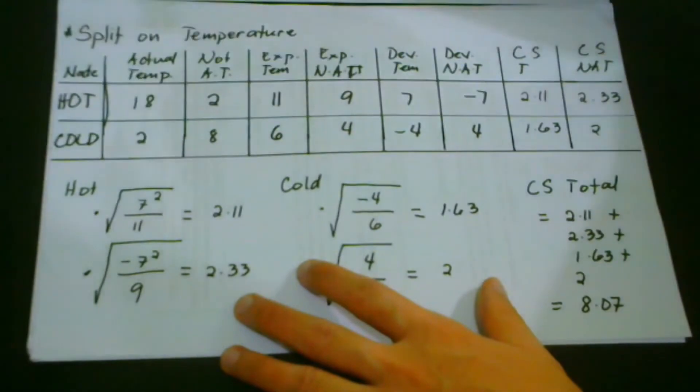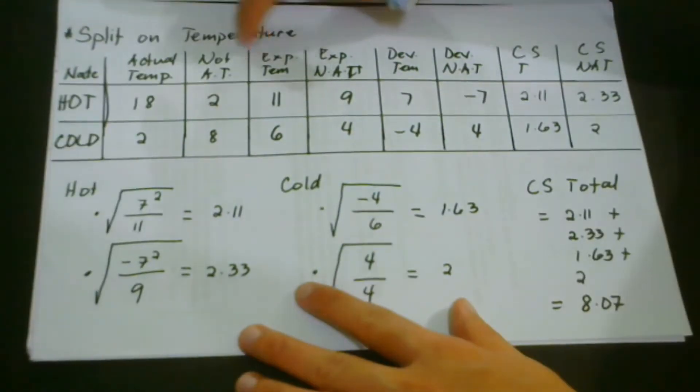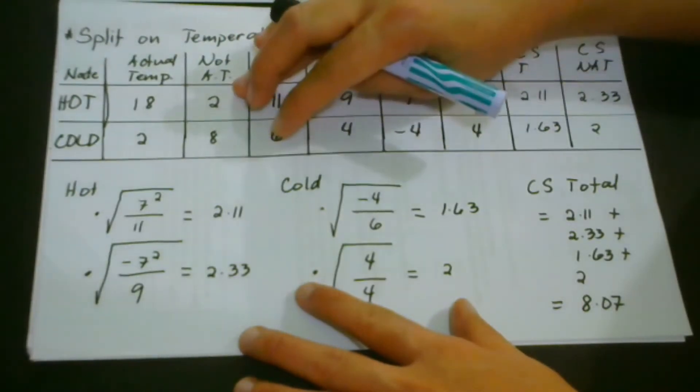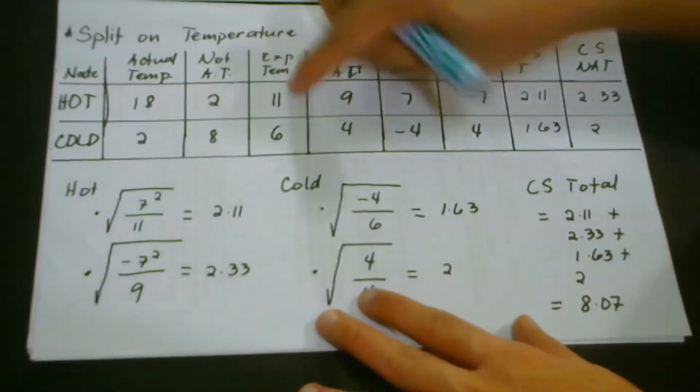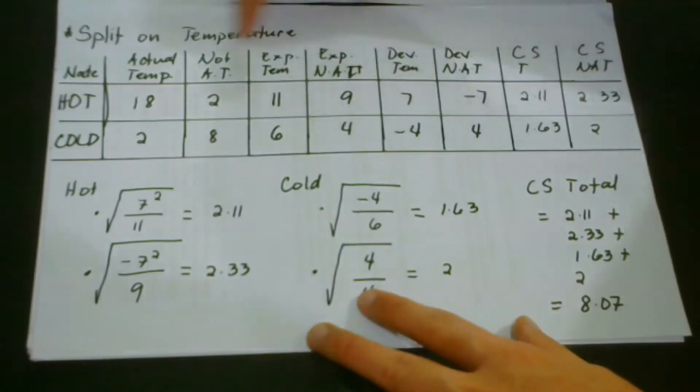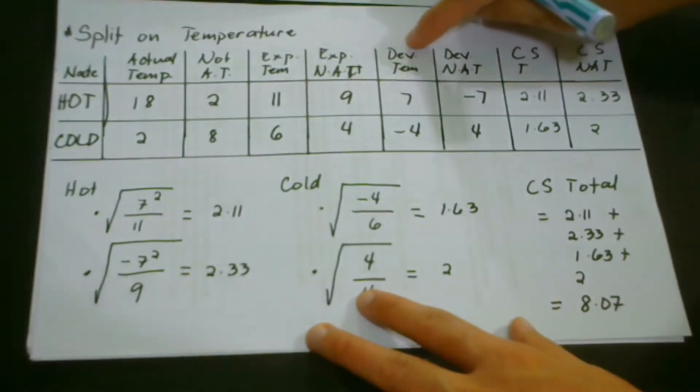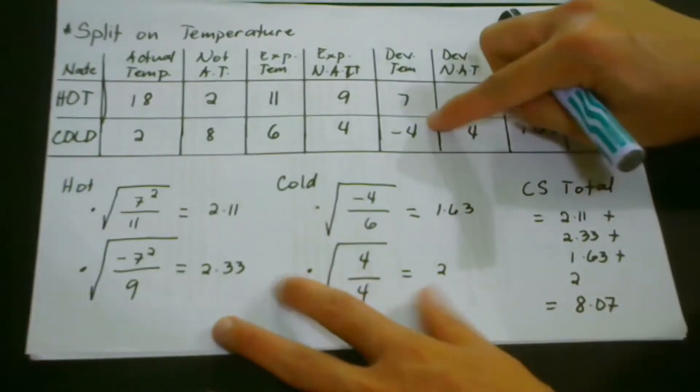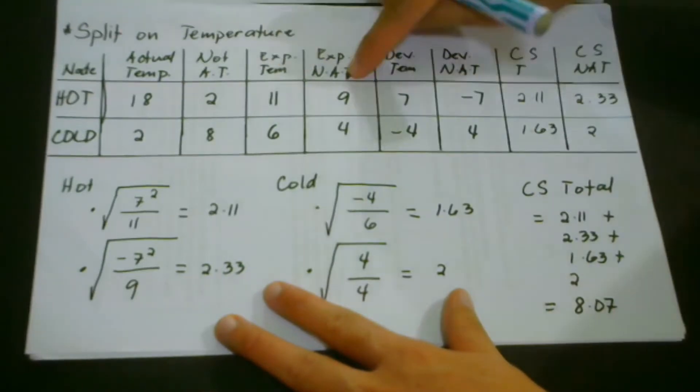So if you could still remember, we have here two nodes for the split on temperature. We have the hot and the cold. And this one here is the actual value, and here is the not actual temperature of the hot and the cold. And here is the expected temperature, and here is the expected value of the not actual temperature.